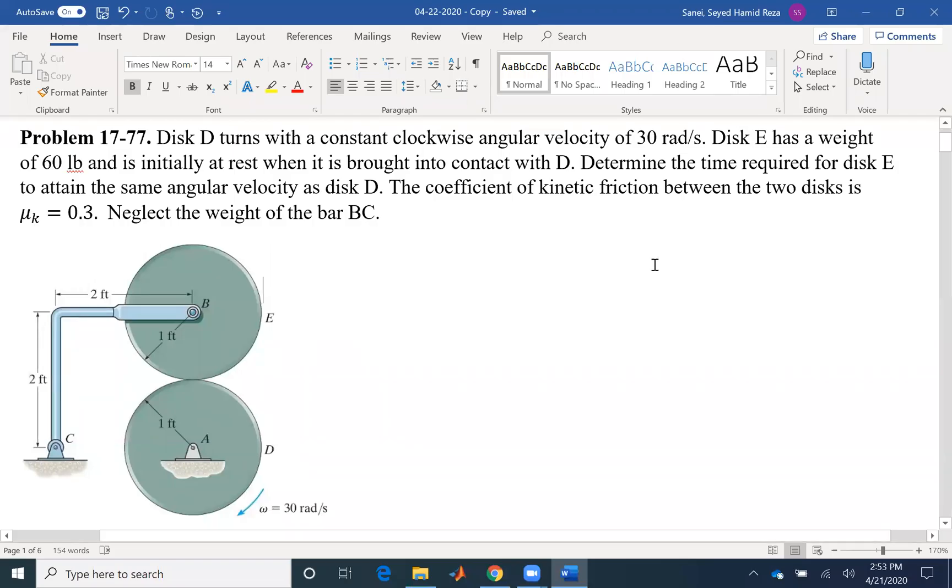Hello everyone. Today we are going to solve a problem on kinetics of a rigid body topic. Disk D turns with a constant clockwise angular velocity of 30 radians per second.